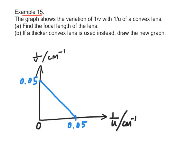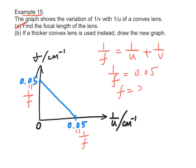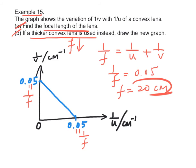Example 15, part A: By the lens formula 1/f = 1/u + 1/v, we know the intercept on the graph equals 1/f. Therefore, 1/f = 0.05 and f = 20 cm. The focal length of the convex lens is 20 cm. For part B, if a thicker convex lens is used, the focal length will decrease to less than 20 cm. Hence, 1/f would be larger than 0.05, and the graph line would shift accordingly.